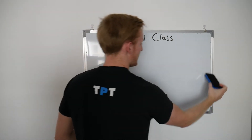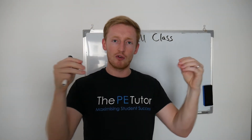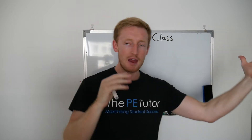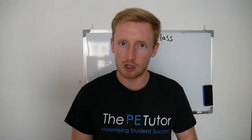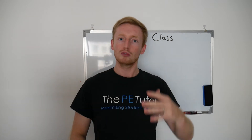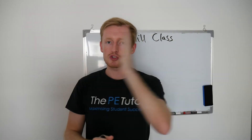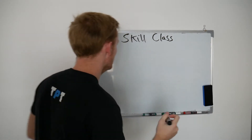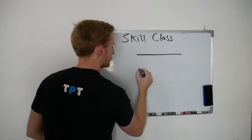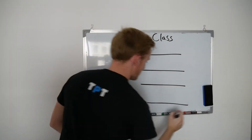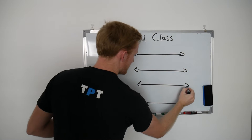So when we talk about skill classification in sports and PE, what we're actually saying is we have the continuum itself, we have the category, we have the measure, but then we have two extremes - one end and the other. Every skill that we try to execute, teach, or learn will fall somewhere on each of these continua. What we need to be able to work out is whereabouts on that continuum the skill would actually fall. So the four continua we have for skill classification in PE - we have four, and at either end we have a different extreme of that measure.